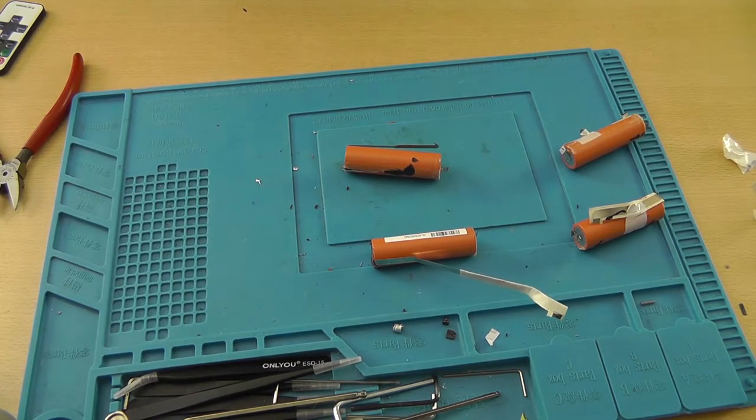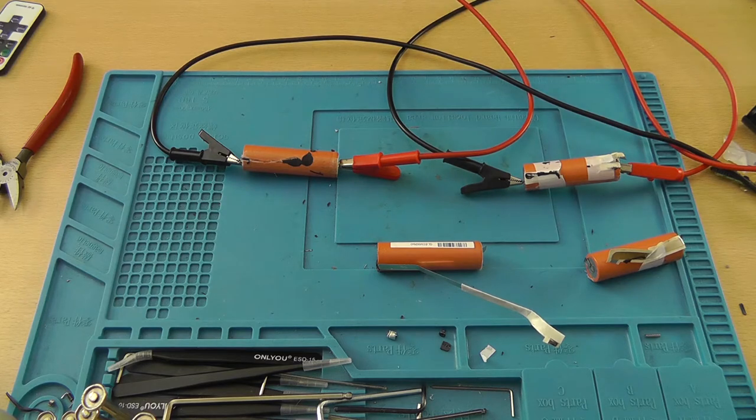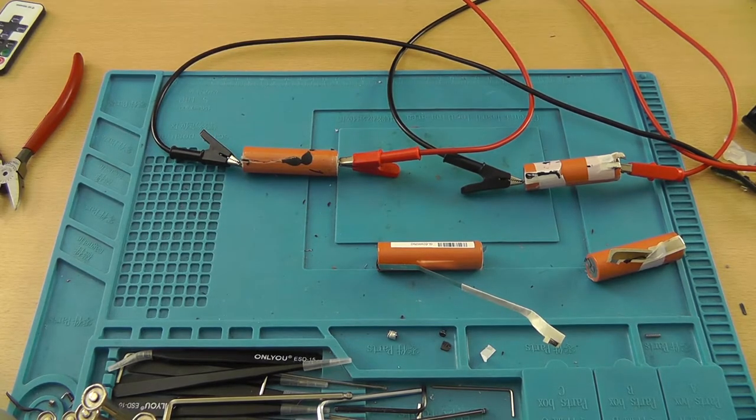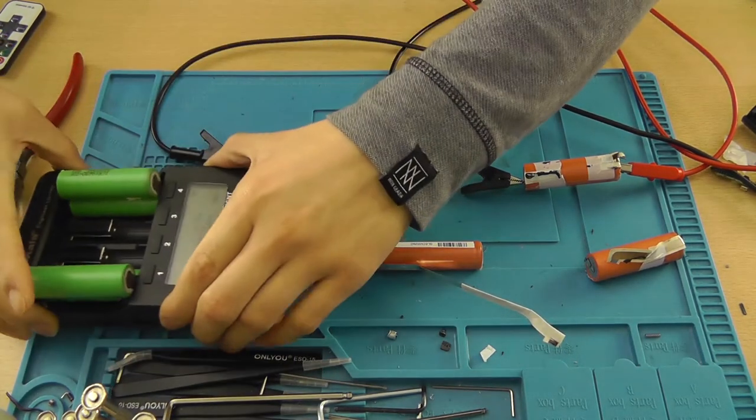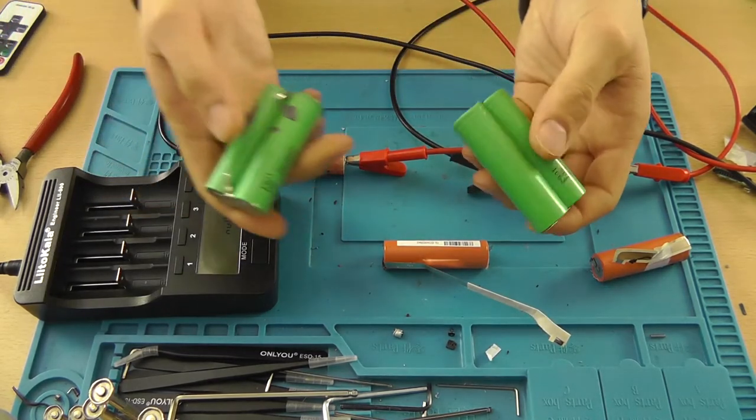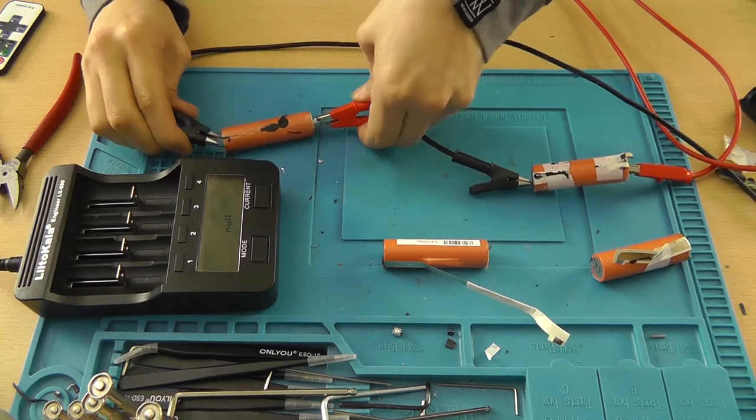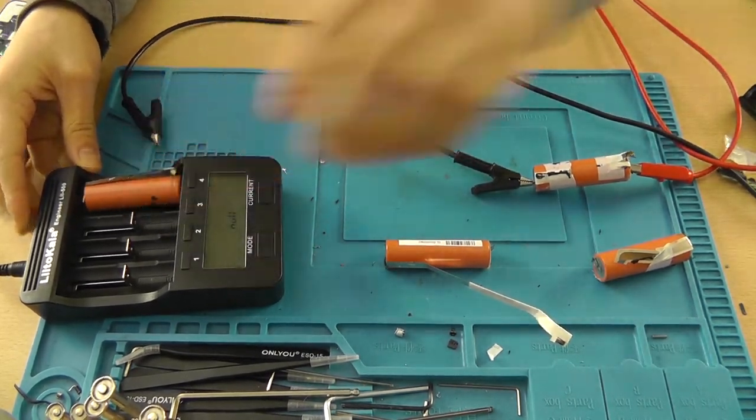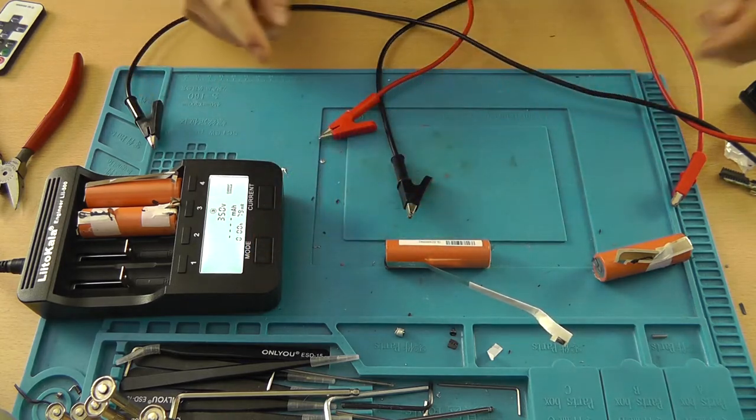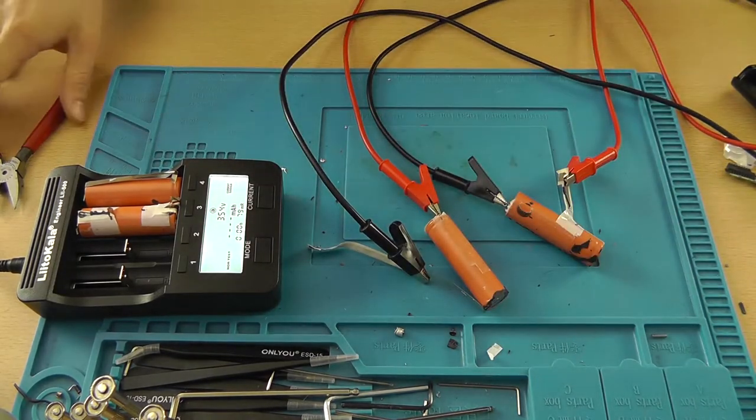Let's get my multimeter to measure the different voltages. 1.1, 1.1, 1.1, 1.2. So they're equally discharged a lot. Let's bump them up with my lab bench and then put them in the battery charger. Let's limit the current to around 2 amps, which should be fine. I'm going to remove these from the battery charger since these are charged and they're okay. Let's put them in the battery charger.